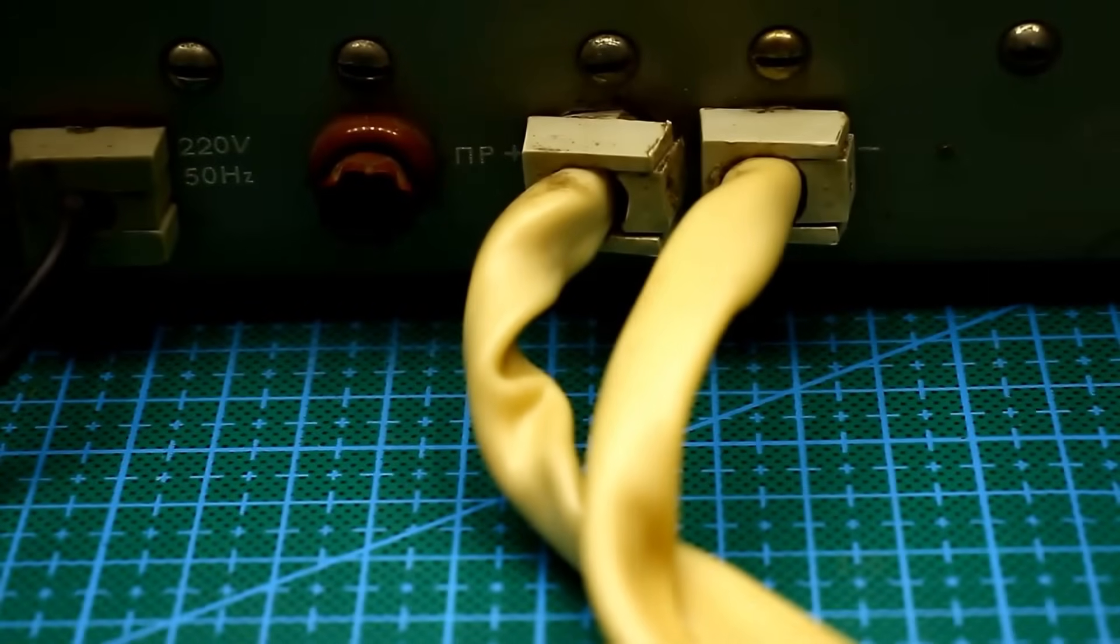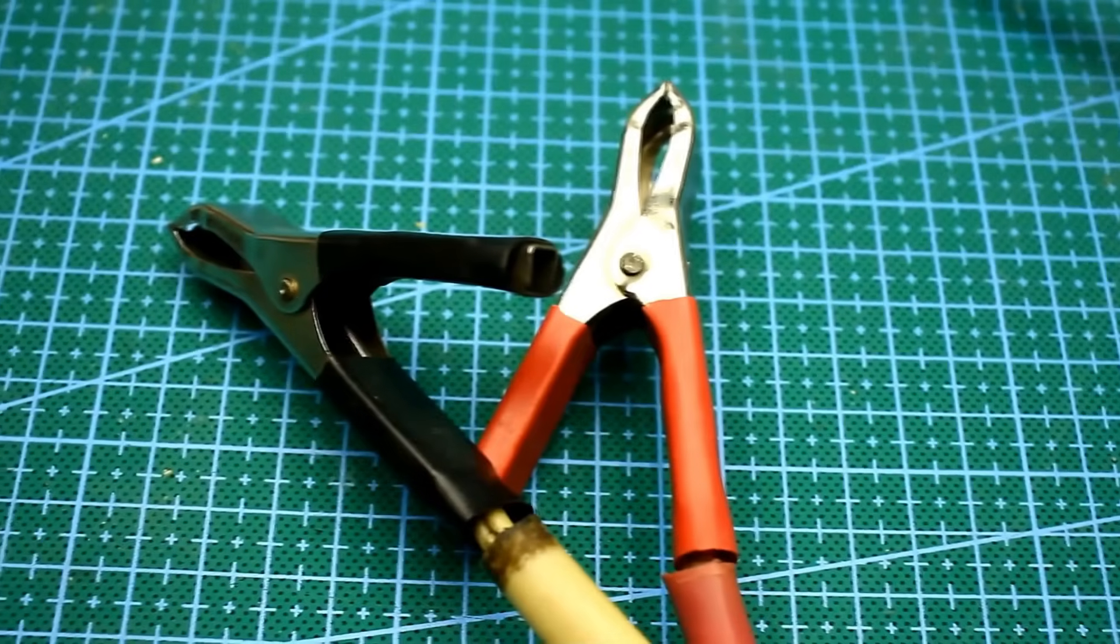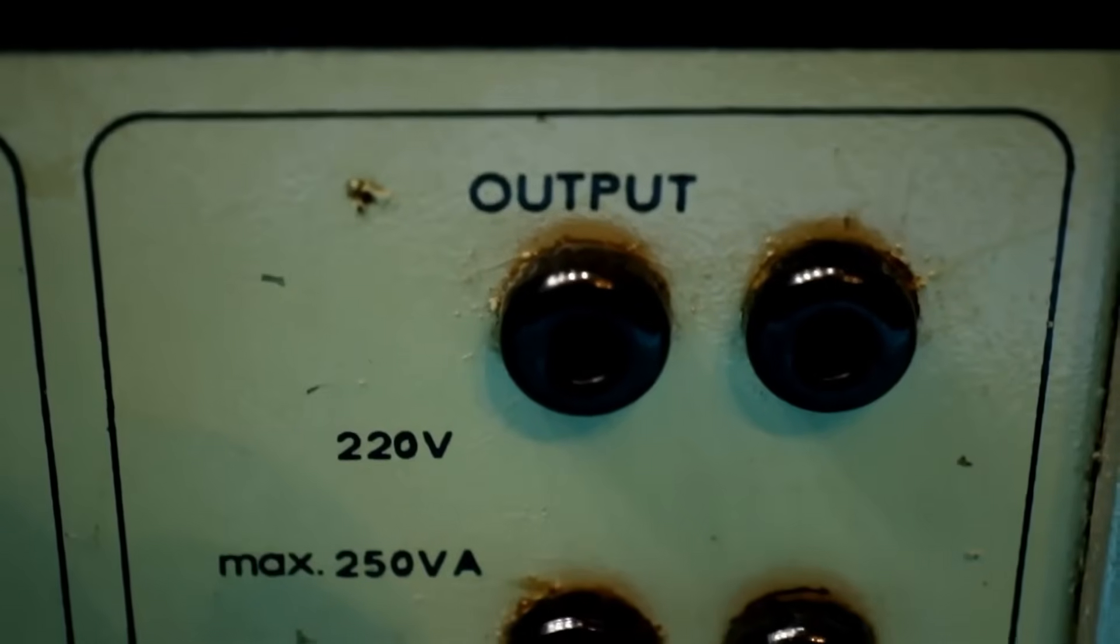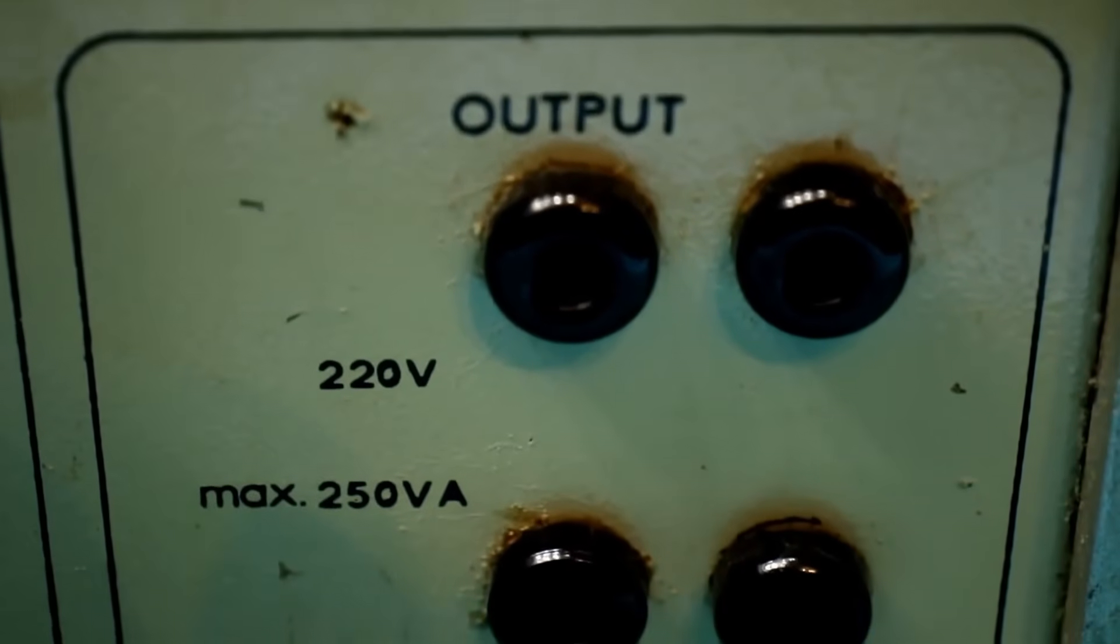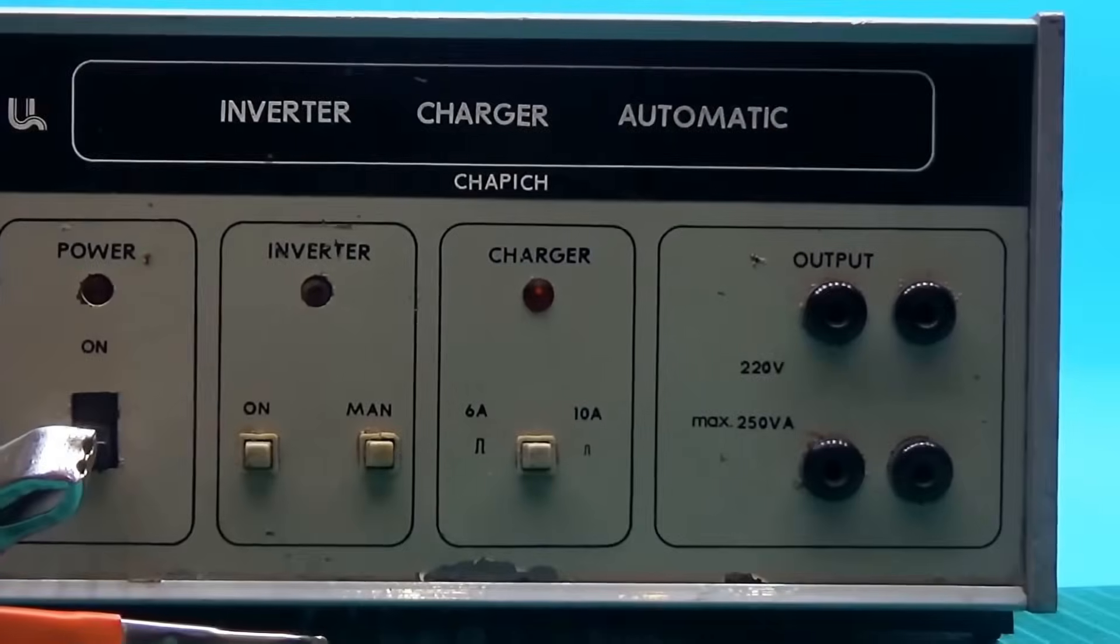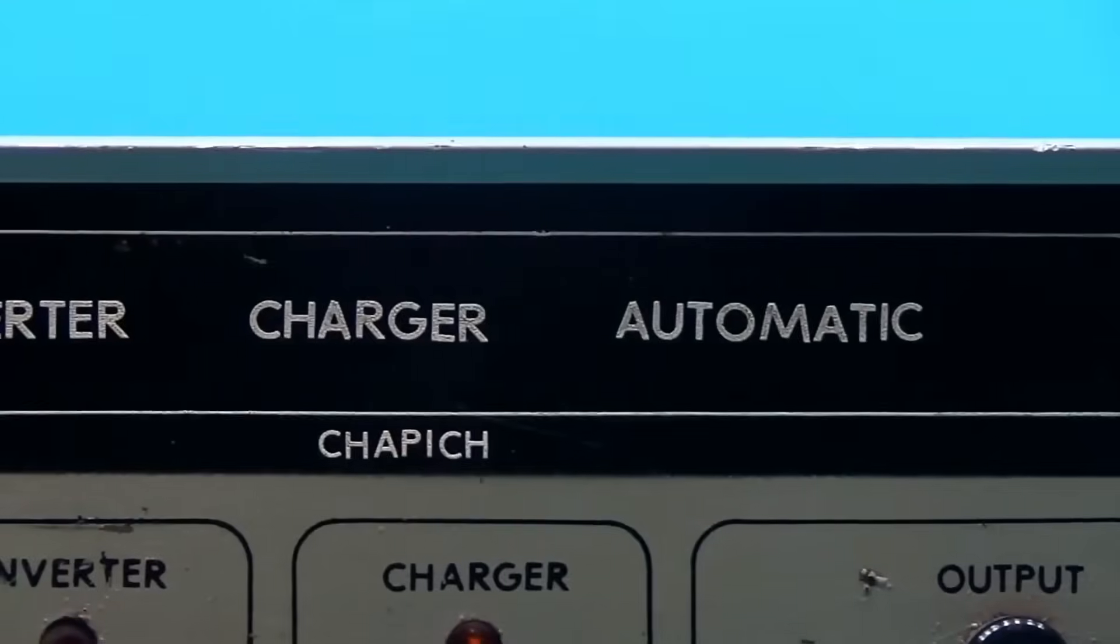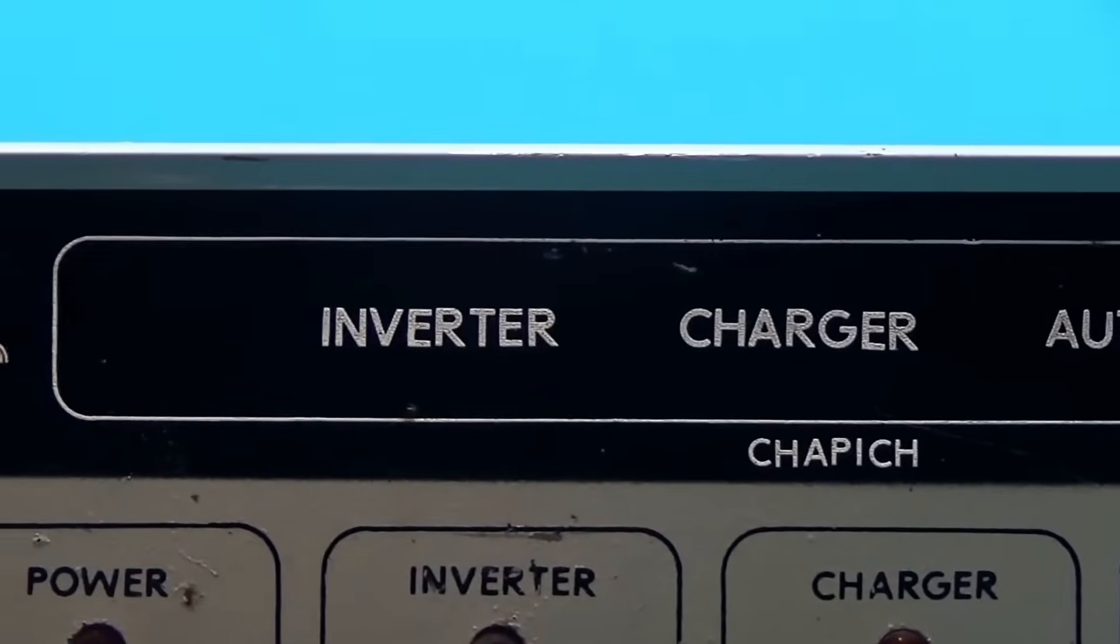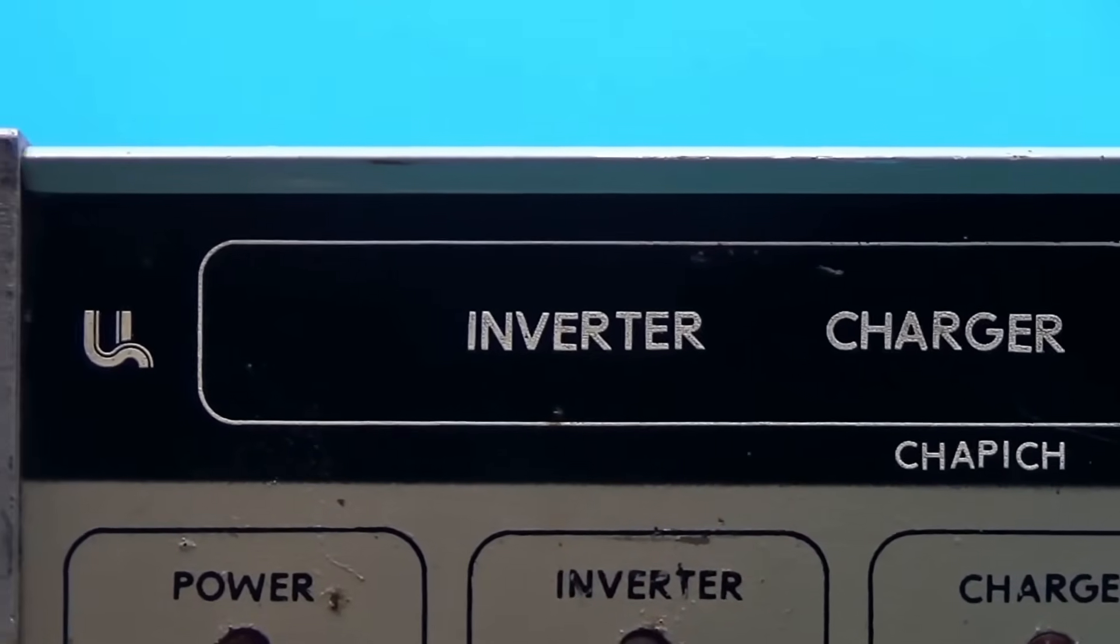When functioning as a step-up converter, the corresponding wires are connected to a car battery, and at the connectors located at the front, a voltage of 220 volts is generated. By the way, the converter here is a genuine 250 watts. That's not bad even by today's standards.